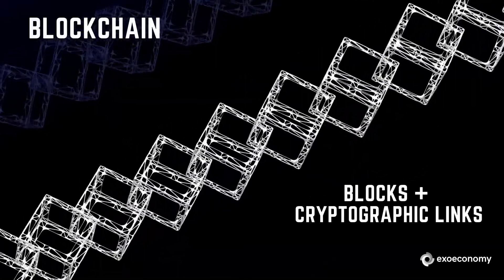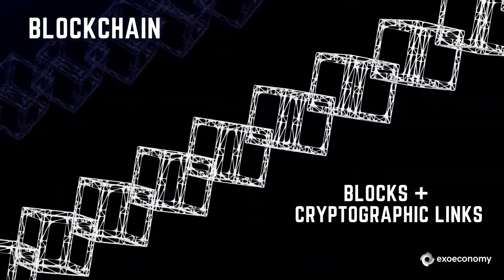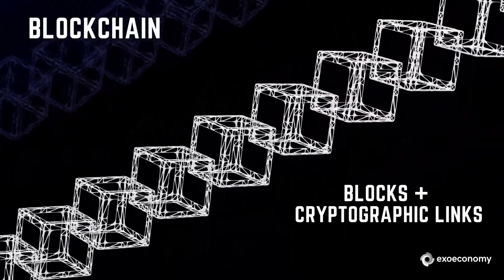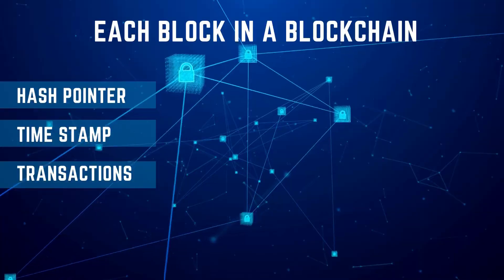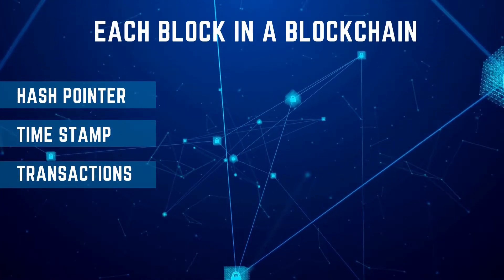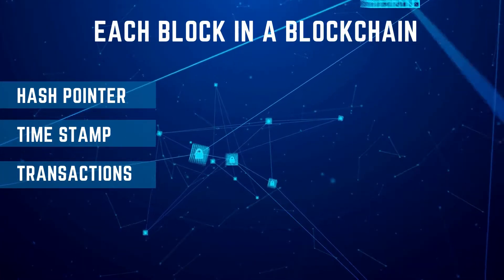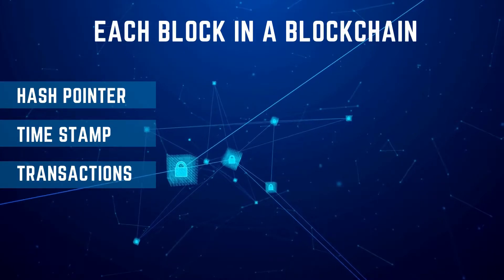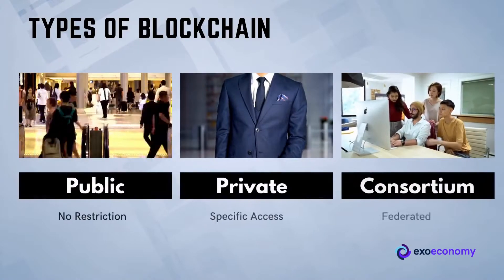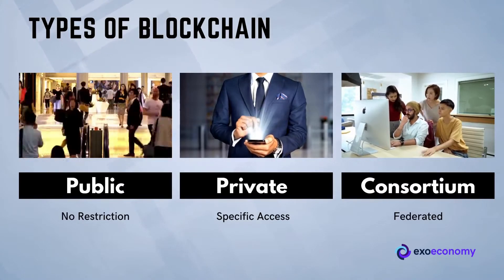A blockchain can be defined as a continuously growing list of records, called blocks, which are linked and secured using cryptography. Each block typically contains a hash pointer linking to the previous block, a timestamp, and transactional data building up the block.